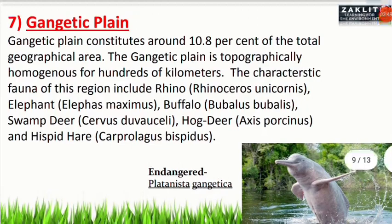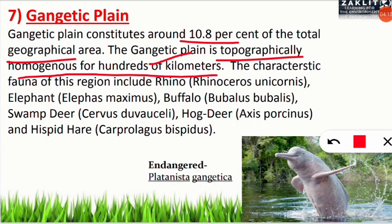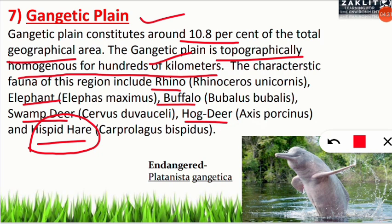The Gangetic Plains constitute about 10.8% of India's total geographical area and are topographically homogeneous for hundreds of kilometres. Characteristic fauna of this region includes Rhinoceros unicornis, Elephant, Buffalo, Swamp Deer, and Hog Deer. An endangered species of dolphin — the Gangetic Dolphin — is also found in the Gangetic Plain region.